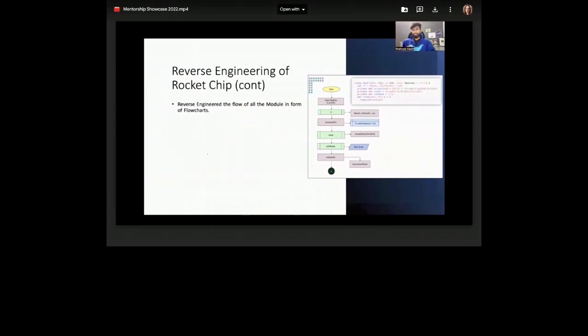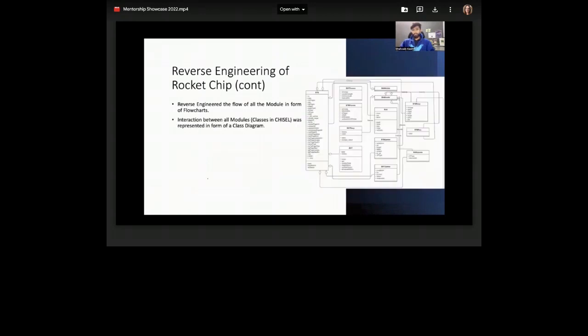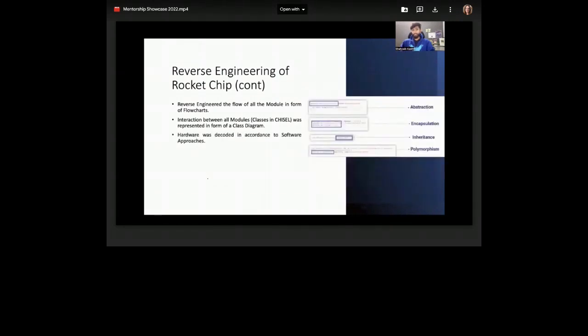I was also part of the team that researched the reverse engineering of Rocket Chip. Rocket Chip is a SOC generator written in Chisel HDL. The problem with this generator is that its architecture is tightly coupled. It is pretty easy to use to generate a SOC, but when it comes to taking out a component and using it in our own design, it is quite difficult. We basically reverse-engineered the entire SOC generator in Chisel by using software engineering methodologies.